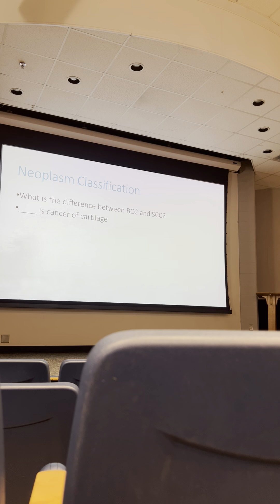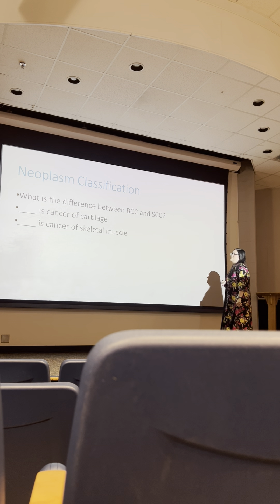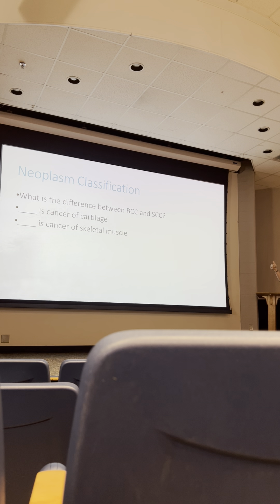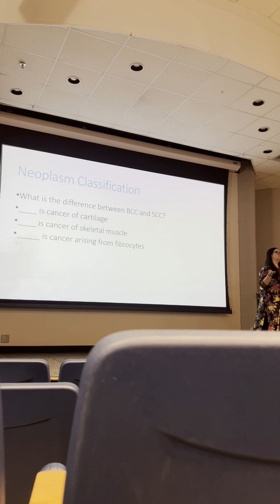If we have cancer impacting our cartilage — hyaline or fibrocartilage — that would be chondrosarcoma. Cancer of skeletal muscle is rhabdomyosarcoma: rhabdo for voluntary skeletal, myo for muscle. Cancer arising from fibrocytes, which make collagen, is fibrosarcoma. Cancer of vasculature is angiosarcoma.